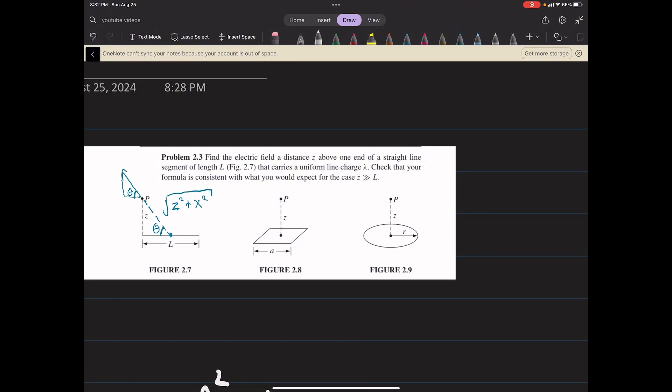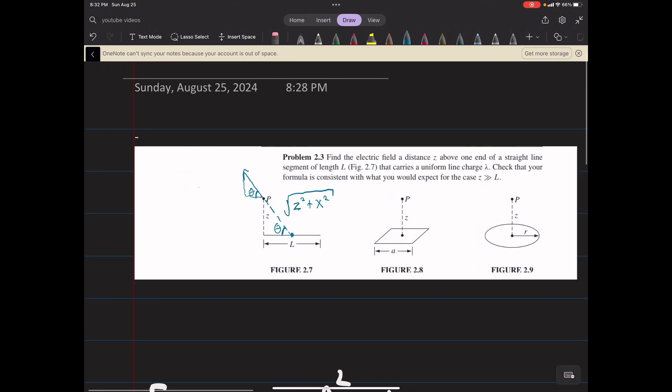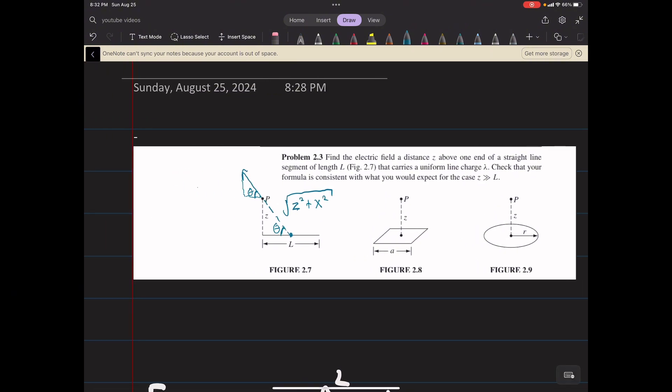Sine of theta, just using right triangle trig here, is going to be the opposite over the hypotenuse, or z over the square root of z squared plus x squared.